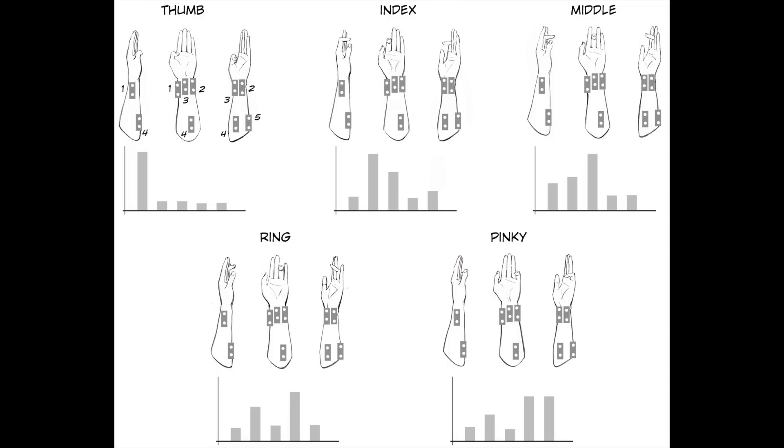The challenge of this project, therefore, is with five pairs of electrodes placed along the forearm, is it possible to decode individual finger movements? For this, we will have to turn to the signal classification world and use certain algorithms.